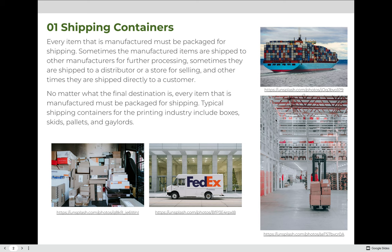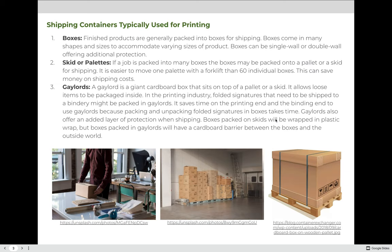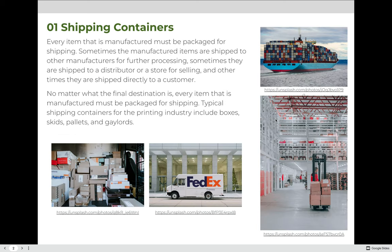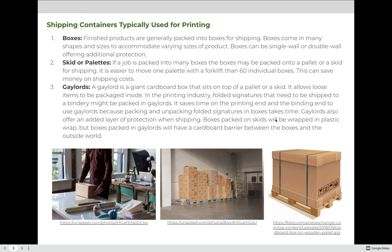Typical shipping containers for the printing industry include boxes, skids, pallets, and what are called gaylords. Boxes are used for finished products. Finished products are generally packed into boxes for shipping. Boxes come in many shapes and sizes and accommodate varying sizes of products. Boxes can be single wall or double wall, offering additional protection. The cost of a single wall carton is cheaper than a double wall carton.